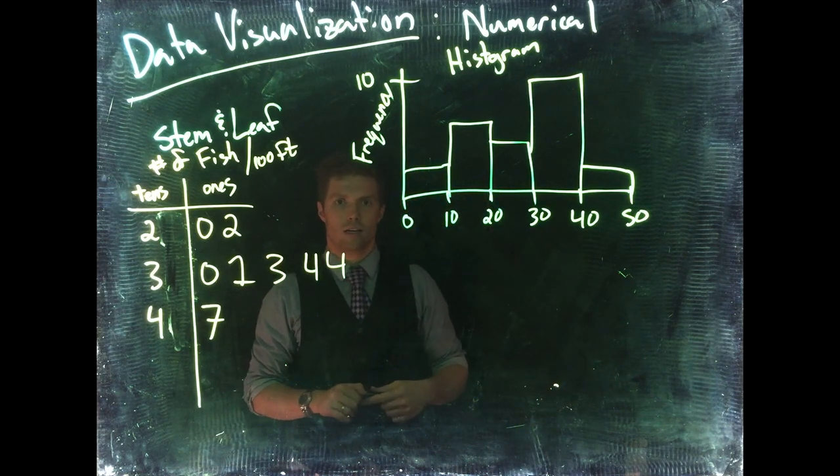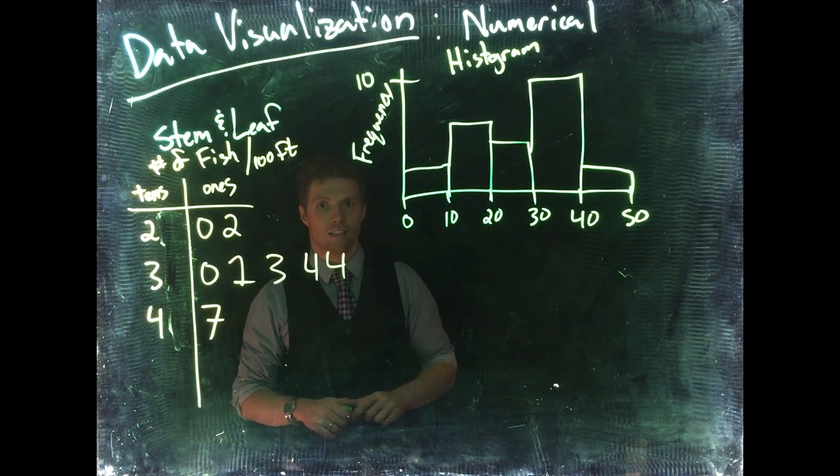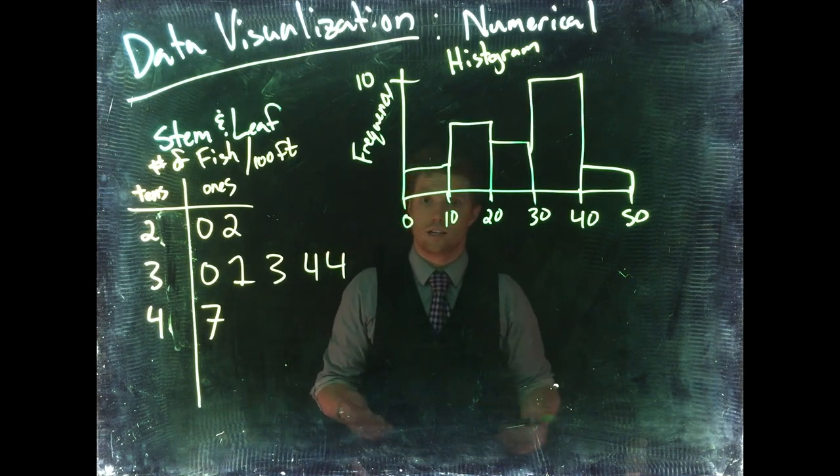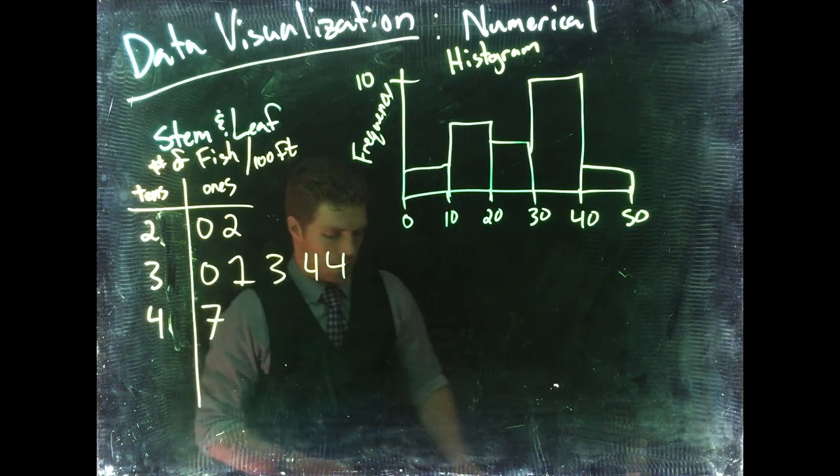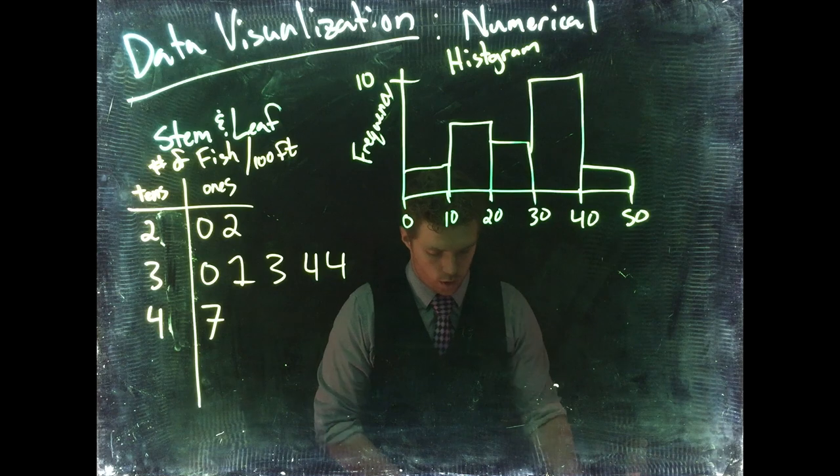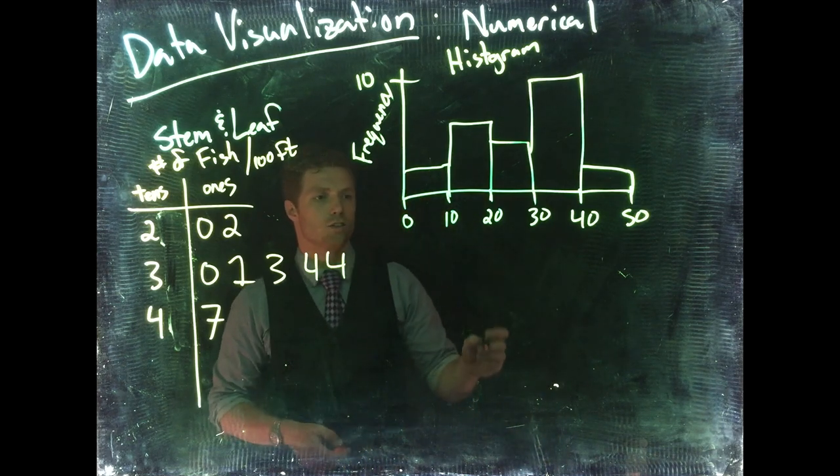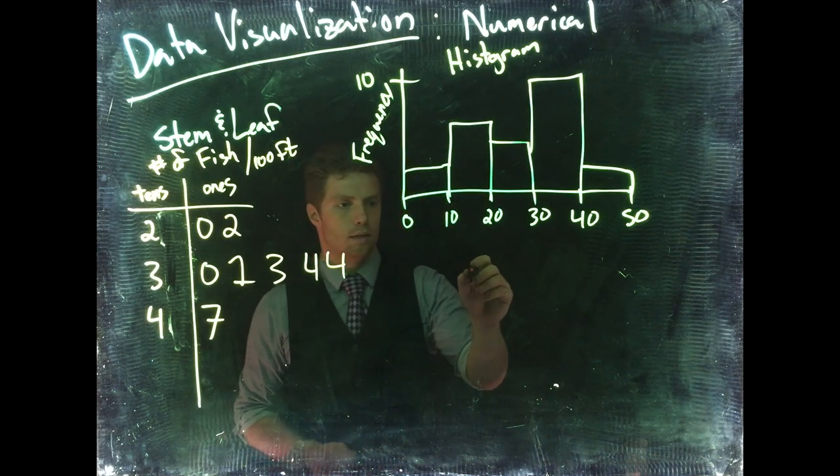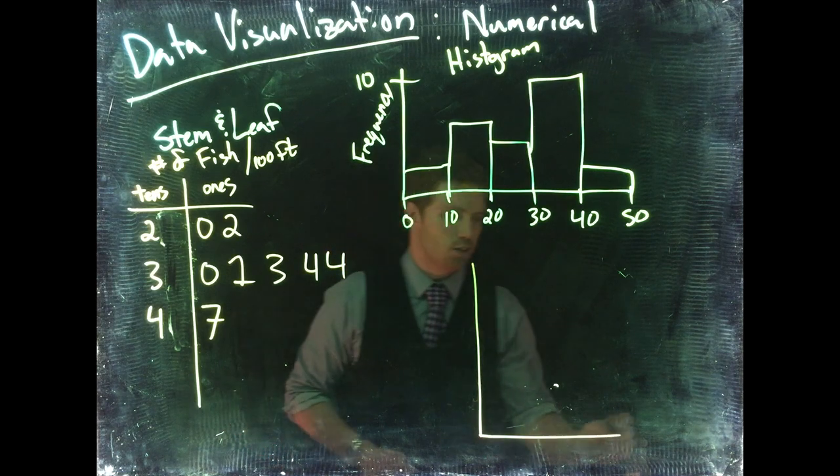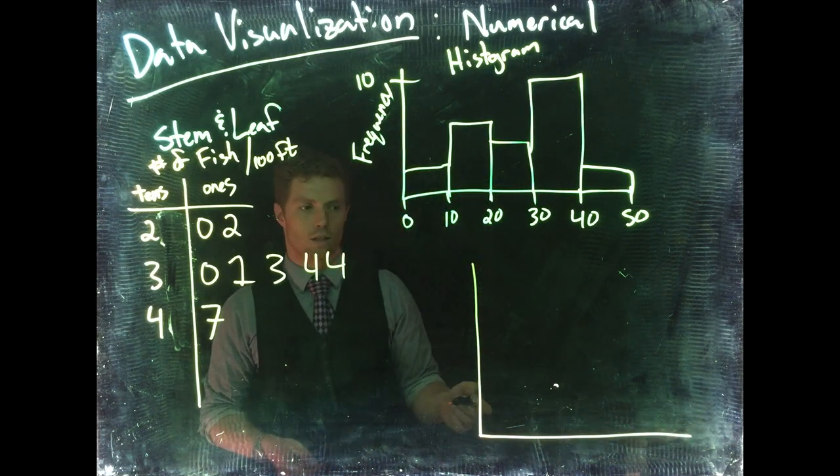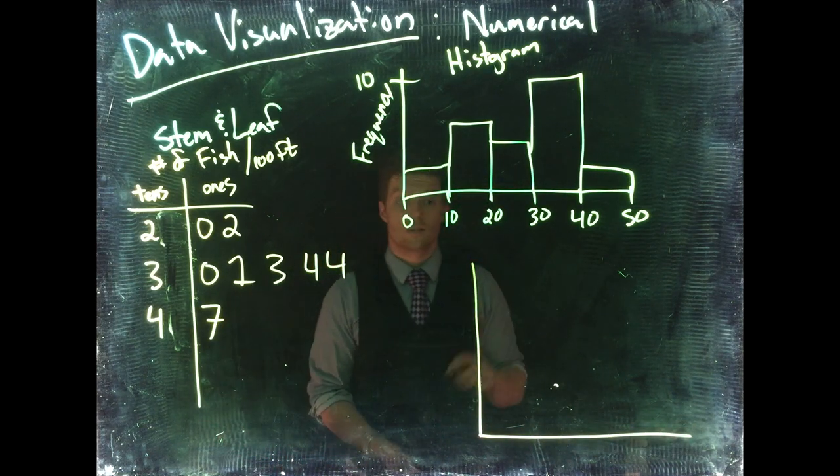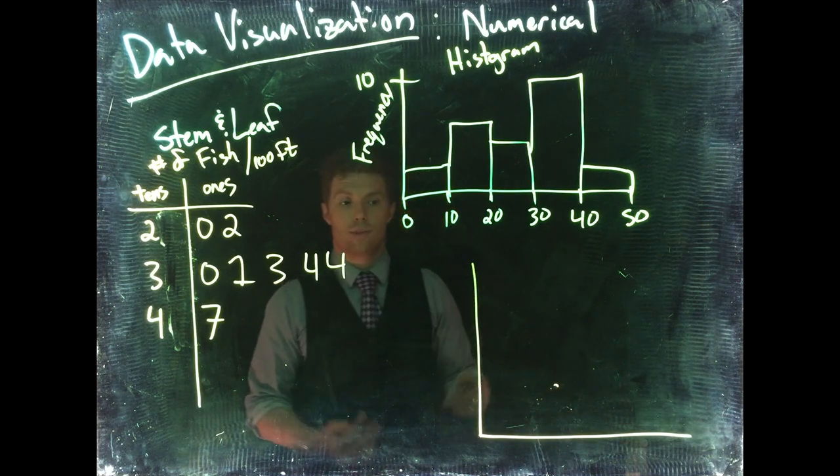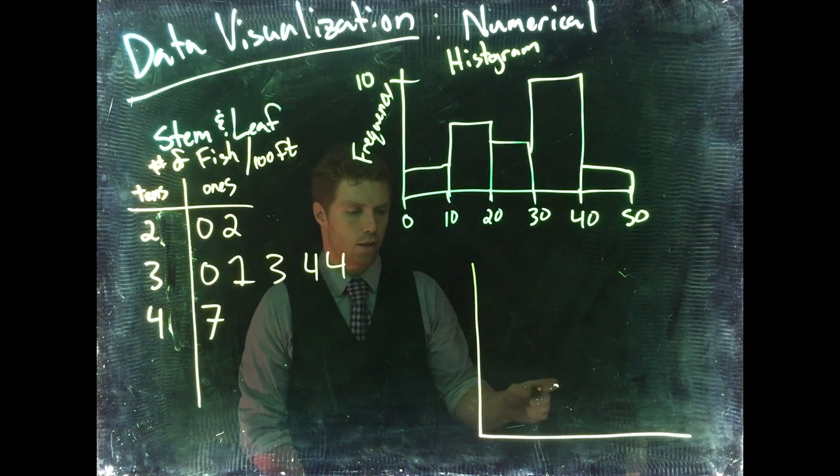This is much more easily scalable and produces very much the same information as the stem-and-leaf. Histograms are very easy to do when we have our data within a data set that some sort of statistical package could analyze. So let's do one more, and these are called box plots.